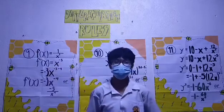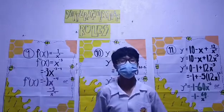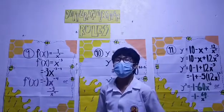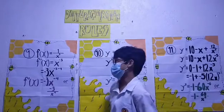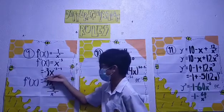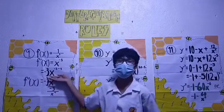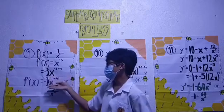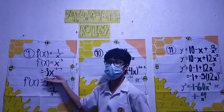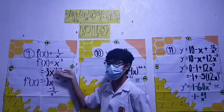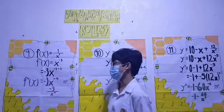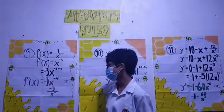Applying the Power Rule, where if f of x is equals to x raised to n, then our f prime of x is equals to n times x raised to n minus 1. We will copy negative 3 right before our x, so it will be negative 3x, and we will subtract our exponent by 1, so it will be negative 3x raised to negative 3 minus 1. We will just copy down negative 3x, and negative 3 minus 1 is equals to negative 4.